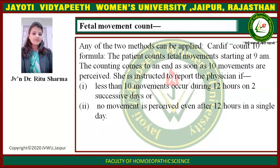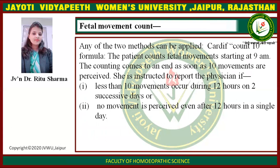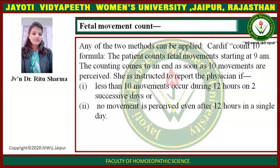For fetal movement count, any of the two methods can be applied. The Cardiff count-to-10 formula: the patient counts fetal movements starting at 9 am. The counting comes to an end as soon as 10 movements are perceived. She is instructed to report to the physician if fewer than 10 movements occur during 12 hours on two successive days.